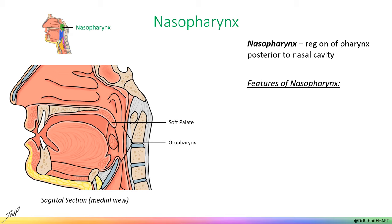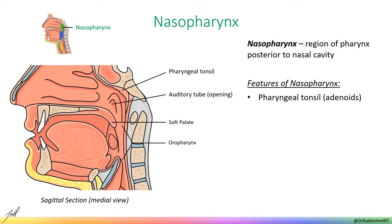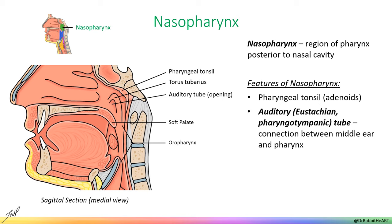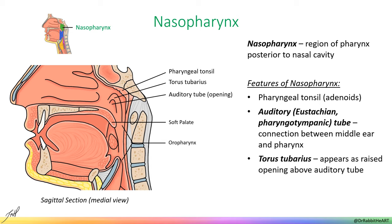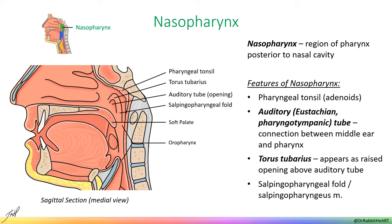Now that we've covered the general structure of the pharynx, we will talk about which anatomical structures are located in each subdivision, beginning with the nasopharynx. The nasopharynx is posterior to the nasal cavity and superior to the soft palate. It contains the pharyngeal tonsil or adenoids, the opening from the auditory tube (also known as the pharyngotympanic or eustachian tube), and the torus tubarius. The auditory tube connects the middle ear to the pharynx, while the torus tubarius is a raised area of cartilage covered in mucosa seen above the opening from the auditory tube. It is a good landmark for dissection. The salpingopharyngeal fold extends down from the torus tubarius and represents the covered salpingopharyngeus muscle.